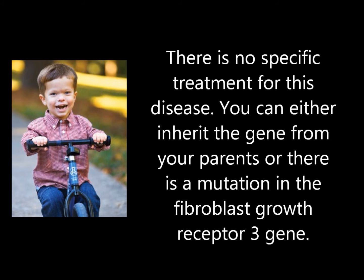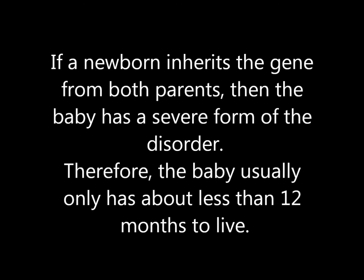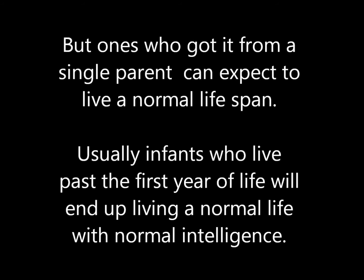There is no specific treatment for this disease. You can either inherit it from your parents or have a spontaneous mutation in the gene. However, canes and braces often help people with severe bowed legs and other problems. If a newborn inherits the gene from both parents, the baby has a severe form of the disorder and usually has less than 12 months to live. Those who inherited it from a single parent can expect to live a normal lifespan.